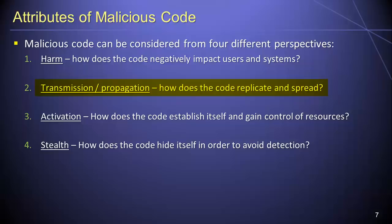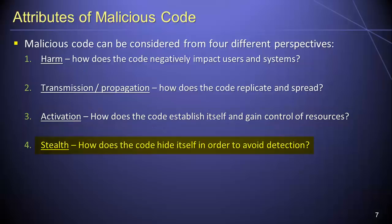Third, we can consider the ways in which a malware program becomes active, and we can accomplish this by determining how the program establishes itself and gains control of system resources. Many different activation vectors exist for malicious programs, and most of these exploit some sort of system vulnerability. Finally, we can consider the stealth characteristics of a malware program by determining how the program hides itself to avoid detection.